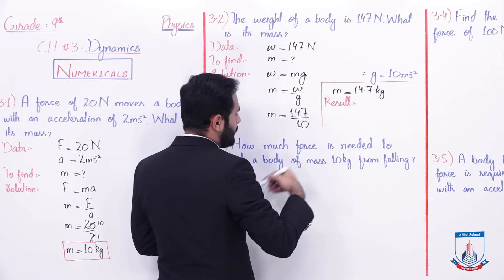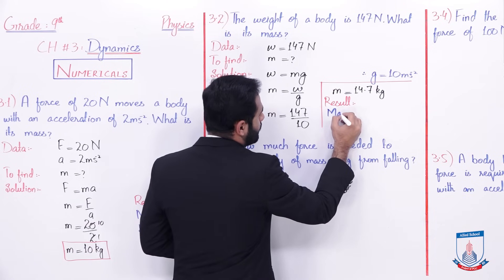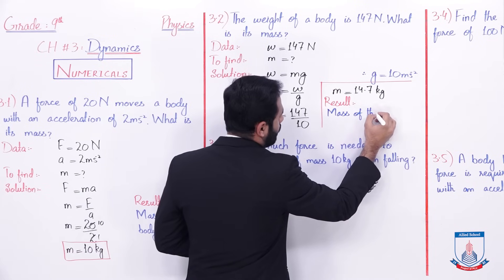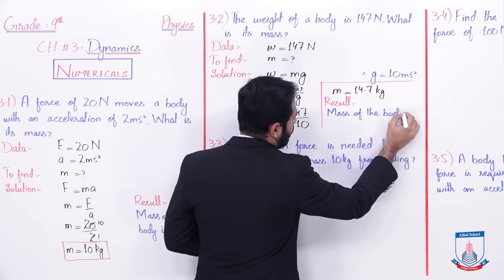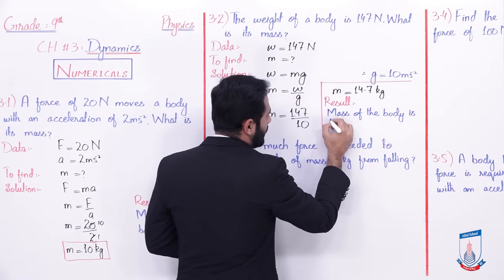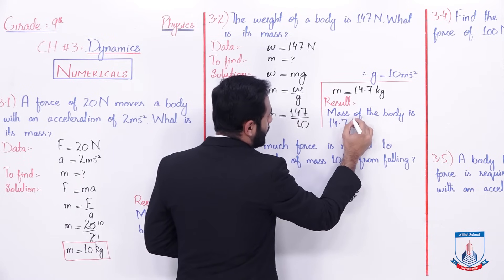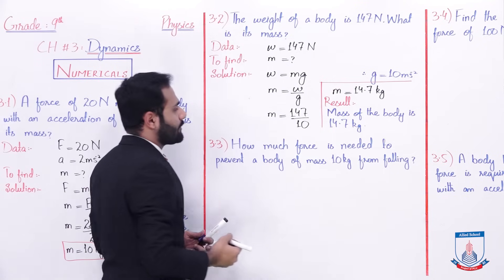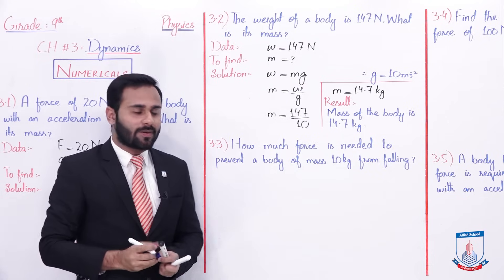Write the result: mass of the body is 14.7 kilogram.